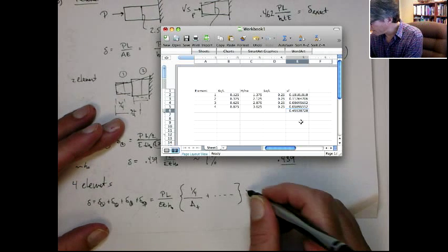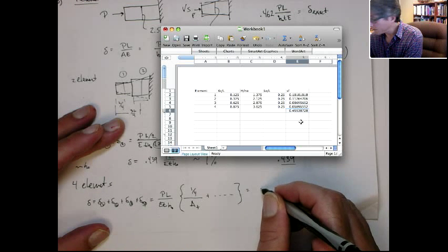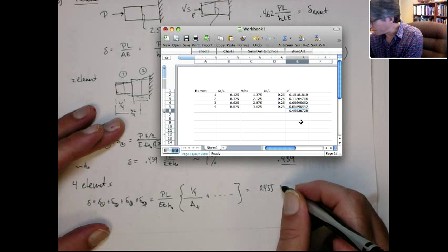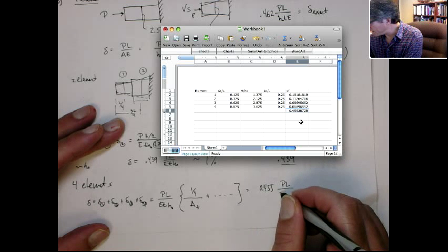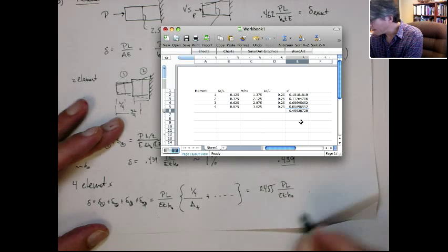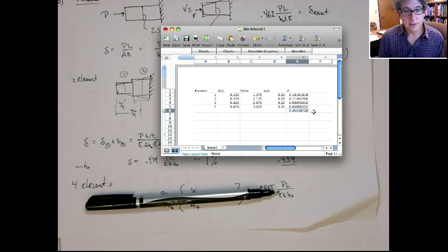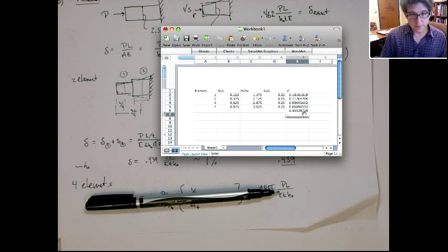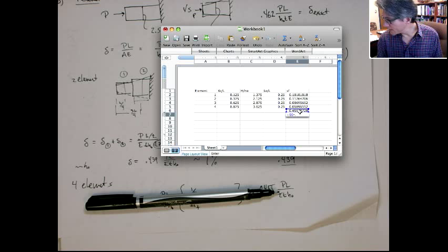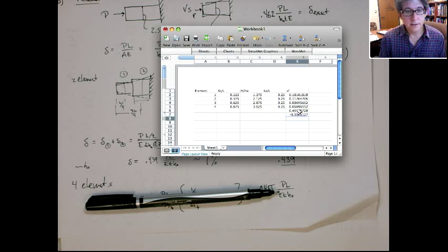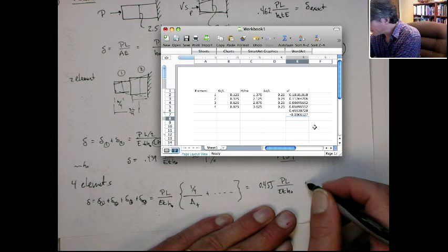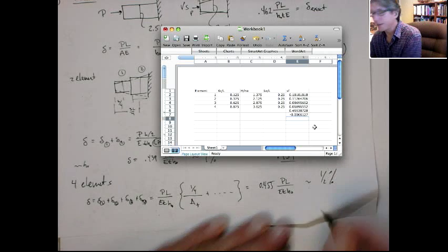So if I go down here, this is going to become 0.455 times PL over ETH naught. And then the error we can get off of that is the exact is, let's get this minus the exact is 0.462. And so that gives us an error of a half a percent. So we're down to about one-half percent error right there.